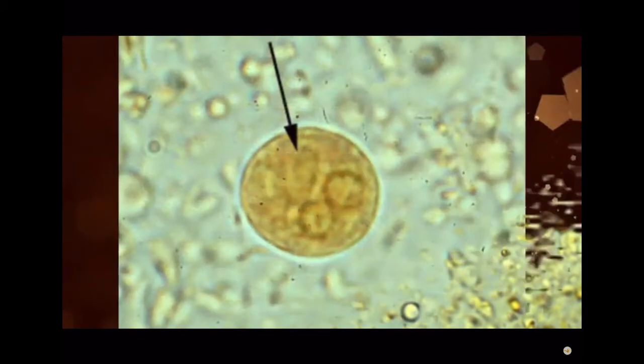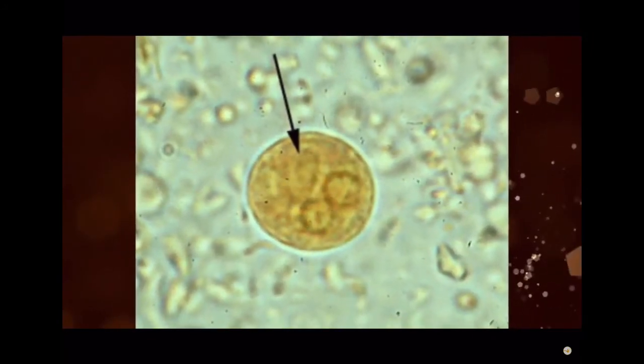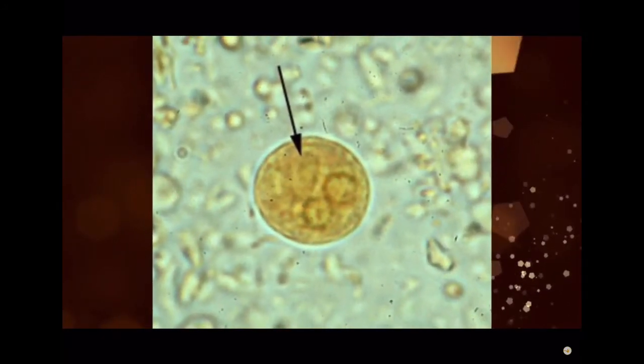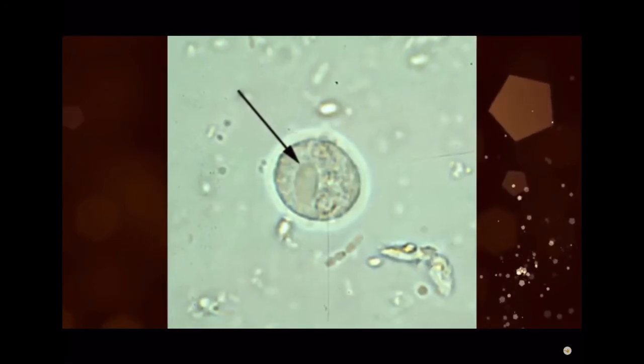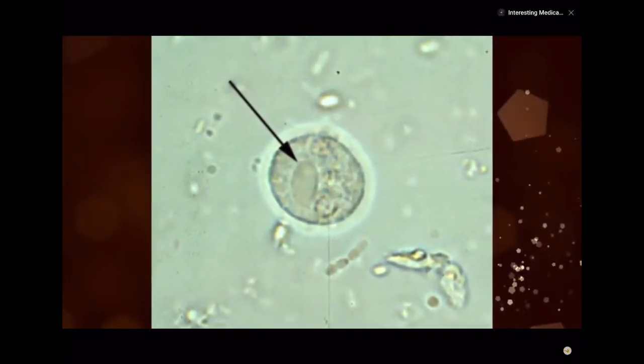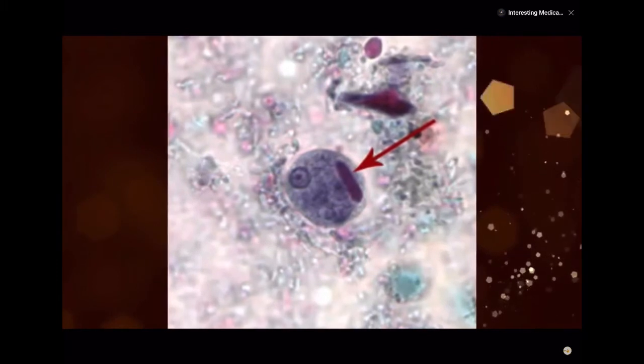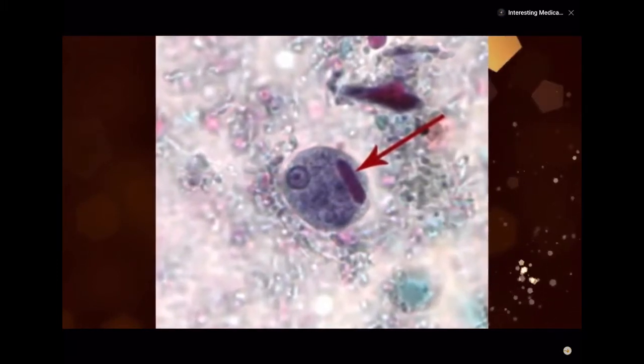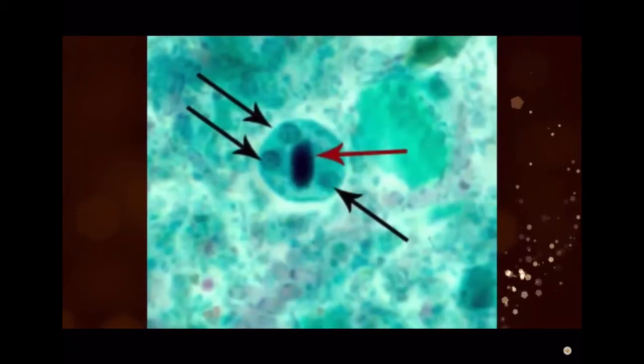Cytoplasm is yellowish-gray in color after staining with iodine solution, granular and dirty in appearance. Cysts usually measure 12 to 15 micrometers. The membrane is thin, regular and circular.